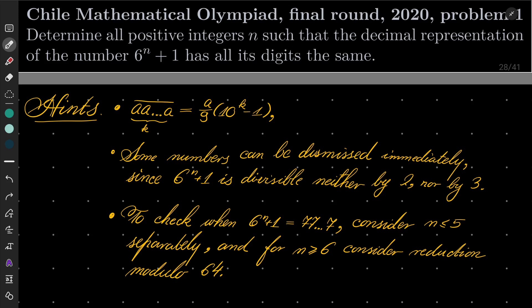And finally, the most interesting case is when our number equals 777 and so on. To check when this is possible, consider separately cases when n is less than or equal to 5,